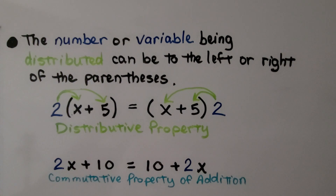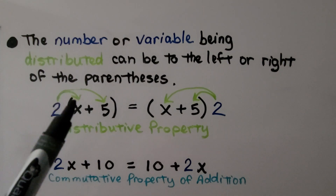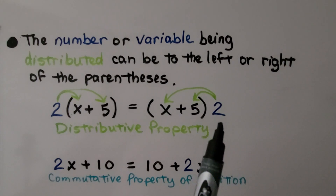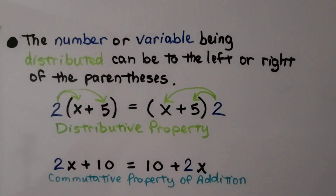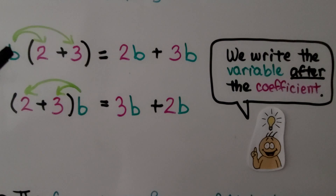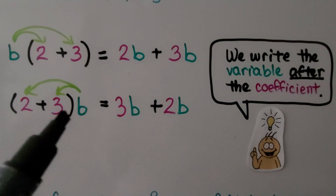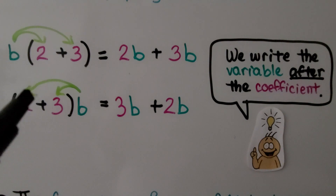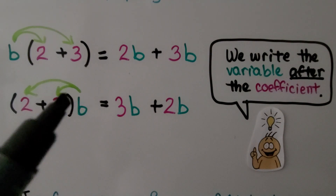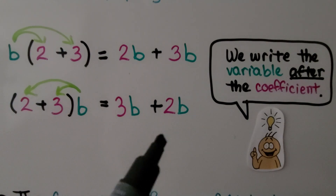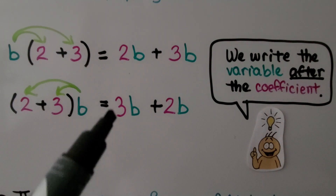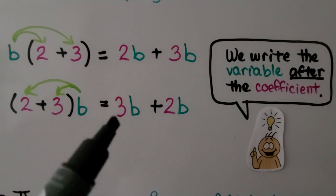The number or variable being distributed can be to the left or to the right of the parentheses. We have two x plus ten, which equals ten plus two x — reversing the order of the addends is the commutative property of addition. With the distributive property, b times two plus b times three can be written as 2b plus 3b. The order doesn't matter because of the commutative property. We write the coefficient first, then the variable — so we write three b, not b three.